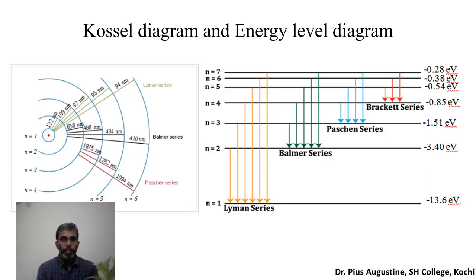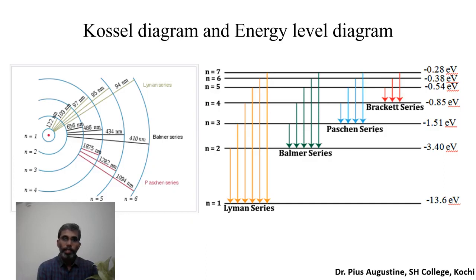In the energy level diagram, energy values are represented by horizontal lines. For hydrogen atom, putting n = 1 in the energy expression E = −mZ²e⁴ / (8ε₀²n²h²) with Z = 1 and computing with all constant values gives the energy of the first orbit as −13.6 eV. In atomic transitions the energy range is in electron volts (eV), whereas in nuclear discussions the energy range will be in mega electron volts (MeV).